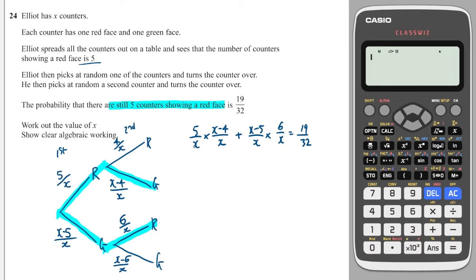Now let's do the multiplication. So this is going to give me 5 lots of X minus 4 over X squared. And this is going to give me 6 lots of X minus 5 over X squared, and that's going to equal 19 over 32.